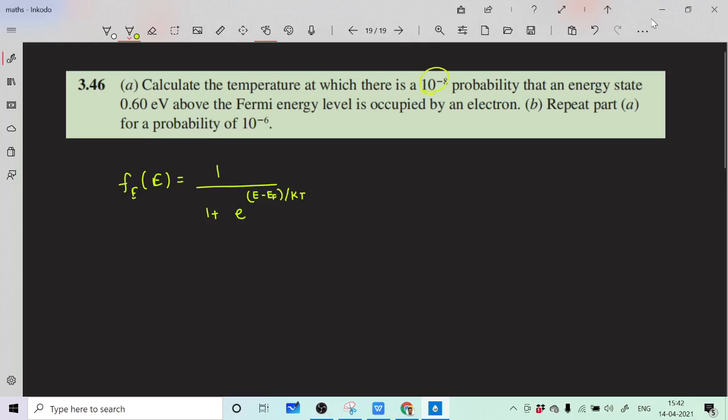We have been given 10 raised to minus 8 probability which will be substituted here. So 10 raised to minus 8 equals 1 upon 1 plus exponential of E minus Ef. This is energy state above Fermi energy level, so we have directly E minus Ef equal to 0.60 electron volt. So it is 0.60 by kT.